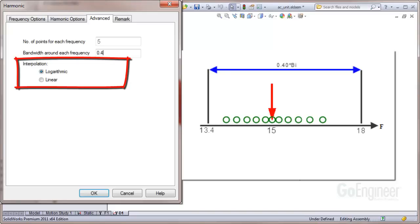For the interpolation scheme, the default logarithmic option indicated on the graphic shows roughly where the calculation points are located. You can see there is good clustering near the center frequency.